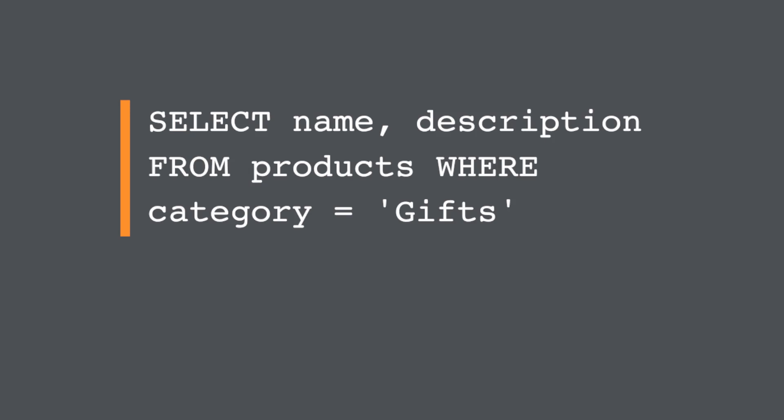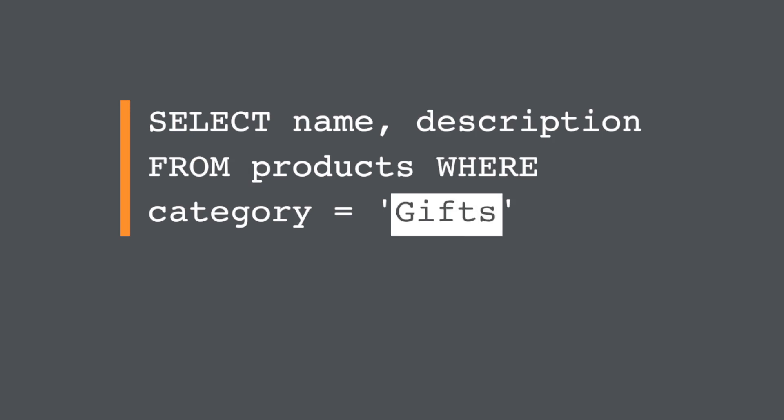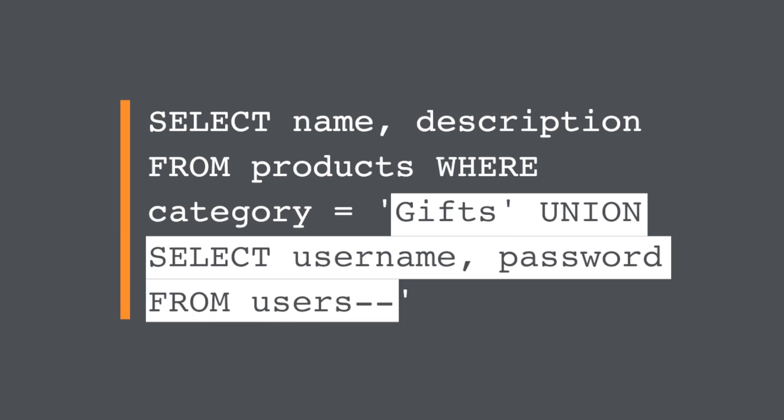In cases where the results of an SQL query are returned within the application's responses, an attacker can leverage an SQL injection vulnerability to retrieve data from other tables within the database. This is done using the UNION keyword, which lets you execute an additional SELECT query and append the results to the original query. If an application executes a query containing the user input GIFs, an attacker can submit a crafted input that will cause the application to return all usernames and passwords, along with the names and descriptions of products.